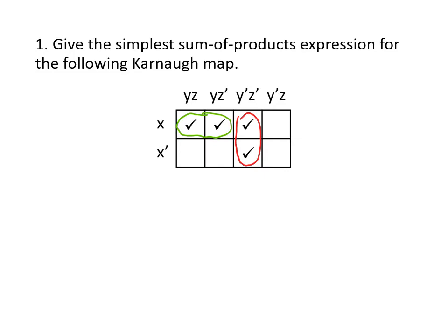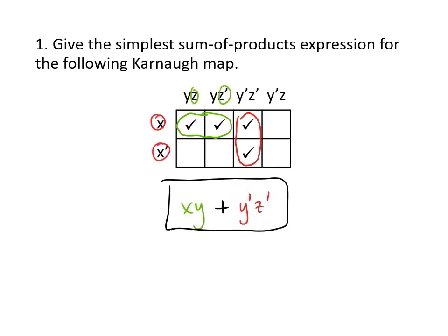We also have two check marks where the x appears as x, the y appears as y, but z appears as both z and z prime. So it doesn't matter what z is. The green grouping is x y — we leave out the z because it doesn't matter what z is. For the red grouping we leave out the x because it could be either x or x prime, but the y has to be y prime and the z has to be z prime. Those are our two products, and the sum of products is just those products added together. Once all check marks are covered by some grouping, we add all the sum of products expressions together to get our final answer.